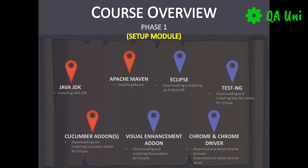We're going to be downloading and installing TestNG to Eclipse. We'll be downloading and installing the relevant Cucumber add-ons for Eclipse. We're going to add some visual enhancement add-ons to Eclipse to make it look more visually appealing. And finally, for the setup module, we're going to download Chrome browser and also download Chrome driver, which is required to execute our tests against Chrome browser.